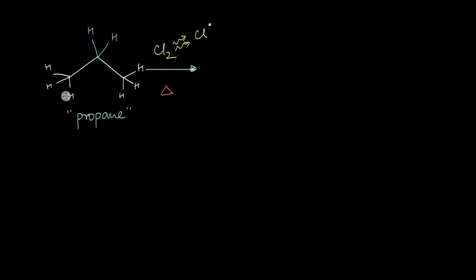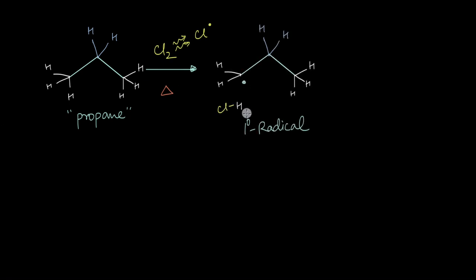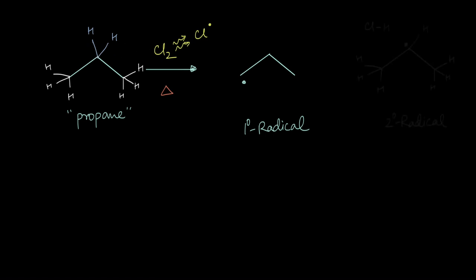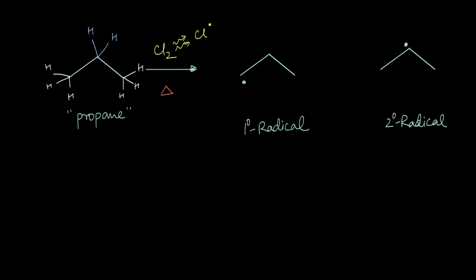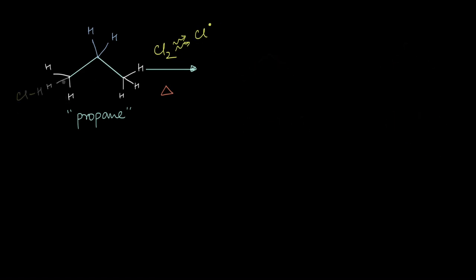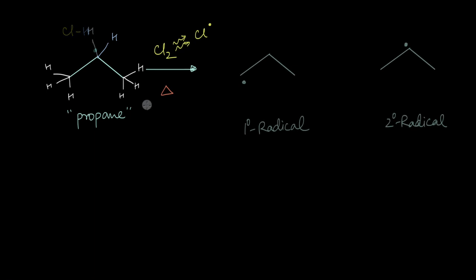If a chlorine radical collides against and abstracts any of the hydrogen atoms at the end of propane — from either end — it leads to the formation of a first-degree carbon radical. But if it abstracts any of the central hydrogens from propane, this leads to the formation of a second-degree carbon radical.